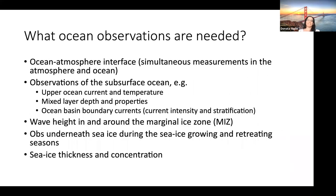So what observations are needed? We want observations of the ocean-atmosphere interface, with simultaneous measurements of the ocean and the atmosphere. We want subsurface observations including upper ocean currents and temperature, mixed layer depth and properties, and ocean boundary currents — with high-resolution observations in boundary currents that provide a source of predictability for S2S variability. We want measurements of wave height in and around the marginal ice zone, observations below the sea ice, observations that capture the processes of sea ice growth and retreat, and observations of sea ice thickness and concentration.